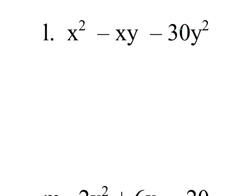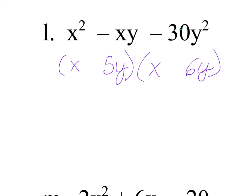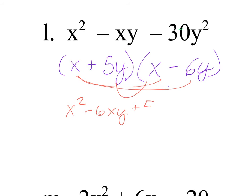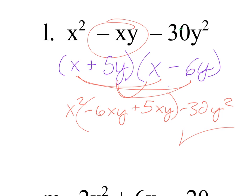For x squared minus xy minus 30y squared, since there's a y squared I have y at the end. Factors of 30 that subtract to 1 are 5 and 6, so I have 5y and 6y. The first operation is a minus, so the largest is minus: x minus 6y, x plus 5y. FOIL check: x squared minus 6xy plus 5xy minus 30y squared — that adds to a negative xy. Check — that one is correct.